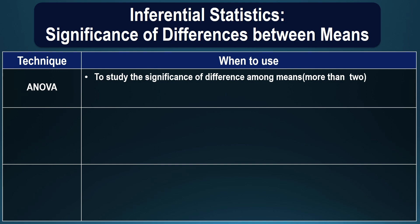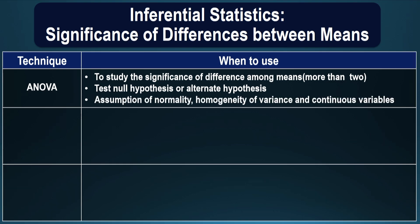If you are interested in finding out the significance of differences among more than two means — that is, 3, 4, or 5 groups — you use analysis of variance, and you can test both the null hypothesis and the alternate hypothesis. ANOVA also carries the same assumptions as the t-test and z-test: normality of distribution, homogeneity of variance, and a continuous variable.